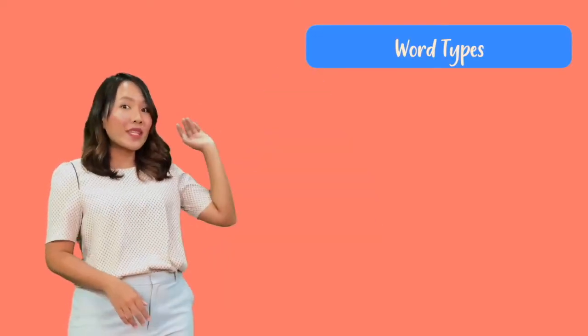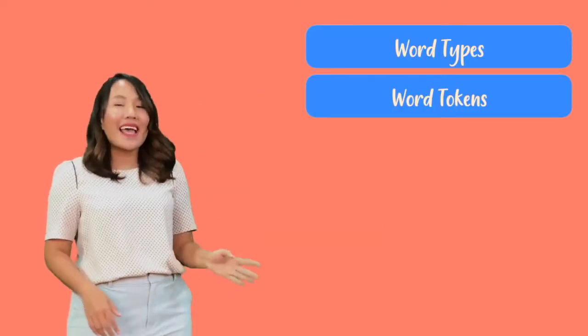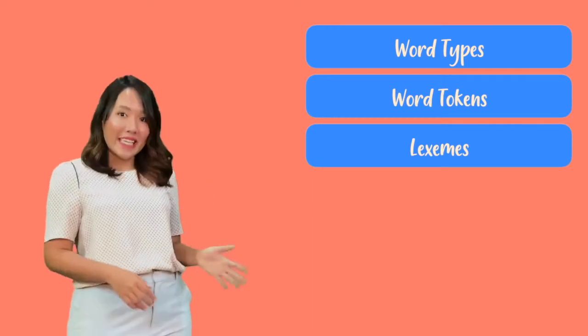The next topic is word count. Now we know what morphology is and what words are. Next, we're going to learn how to count words. Let me introduce three ways to count words: the first is word type, the second is word tokens, and the last is lexeme.